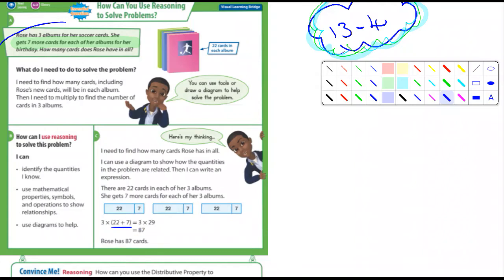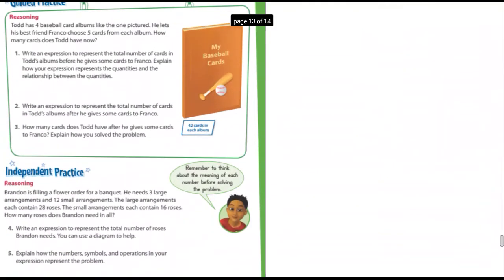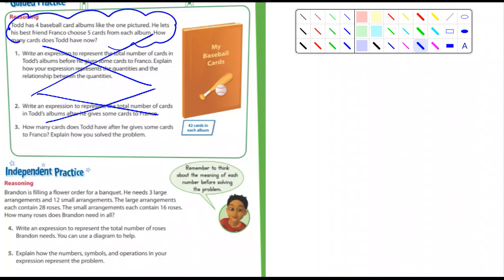So let's not gonna worry about convincing me, you can cross that out. So let's see, Todd has four baseball card albums like the ones pictured. He lets his best friend Franco choose five cards from each album. How many cards does Todd have now? Well, I'm just gonna cross out number one, I'm gonna cross out number two. Number three says how many cards does Todd have after he gives some cards to Franco? Explain how you solve the problem. So this is the information right here that you need, and you also need this information right here. You're gonna need that to solve that question.